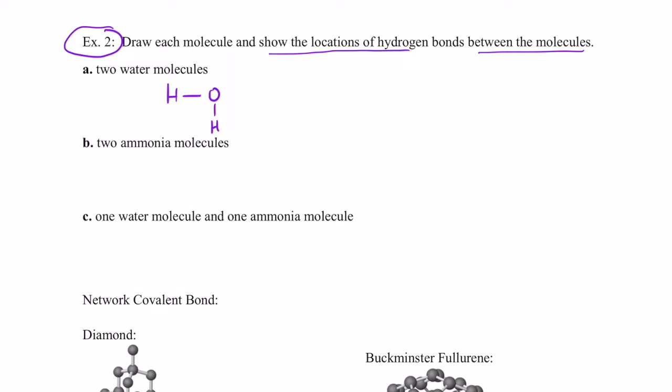We know water is a bent molecule. And of course there are non-bonding electron pairs on that oxygen to complete its octet. We know that there is a concentration of electrons around the oxygen end of that molecule, and a deficiency of electrons around the hydrogen end. So this end is negative, and these would be positive.